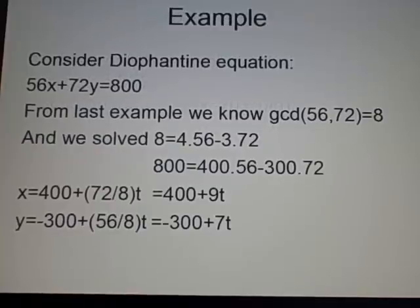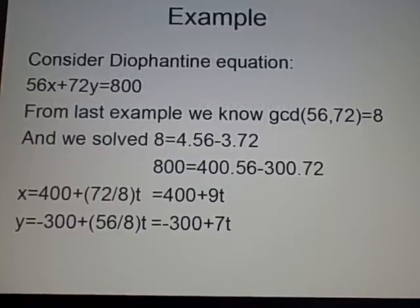Right, an example. Now, we're using the same example we had previously. So, our 56 and 72 have cropped up, and from our last example, we know that the greatest common divisor of these two is 8. And we also solved that 8 is 4 times 56 minus 3 times 72.